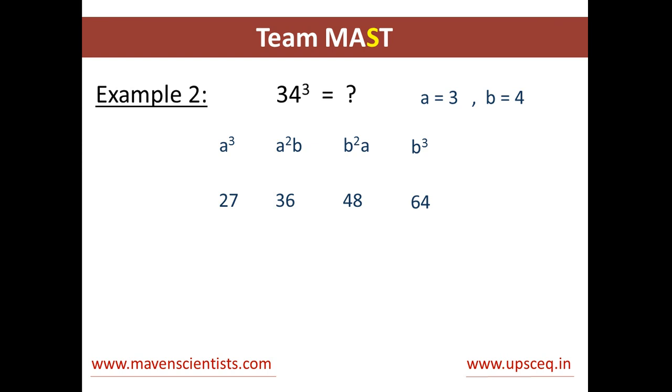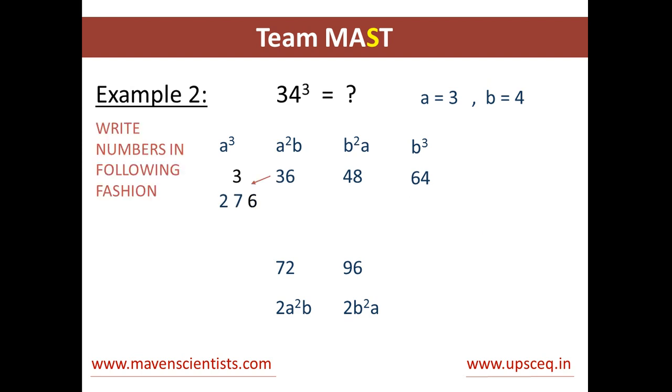So now we have all the values for the expressions: 27, 36, 48, and 64. Following the same steps, we will double the values of the two middle terms. So 2a²b equals 72 and 2ab² equals 96. Now what we will do is write the numbers in the following fashion to calculate the cube of the number 34. We write 36 like this, then we write 48, and then we write 64. We will do the same for the numbers 2a²b and 2ab². We will write 72 like this and 96 like this.